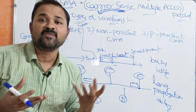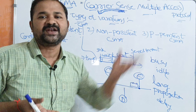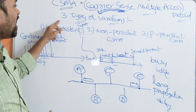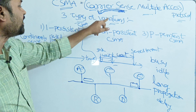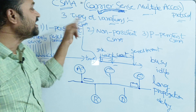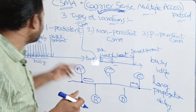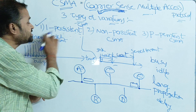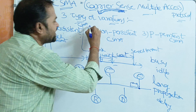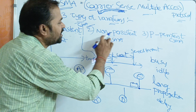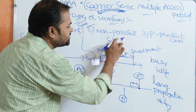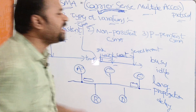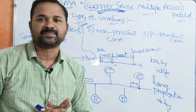To resolve collisions and improve performance, CSMA has three variations: the first is 1-Persistent CSMA, the second is Non-Persistent CSMA, and the third is P-Persistent CSMA.